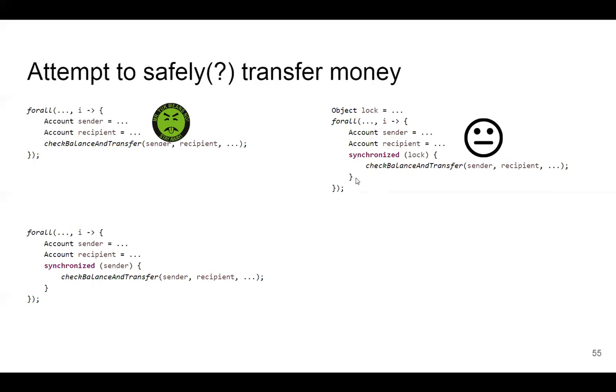If I have millions of accounts in my bank, now everyone has to wait for this one lock. Everyone has to wait for absolutely everyone to finish before they can go. No two transfers can go on at the same time, and that's not really what we're looking for.